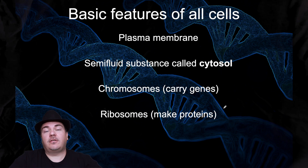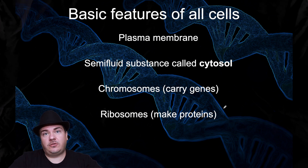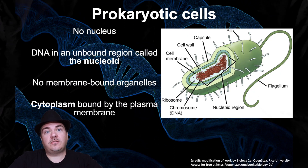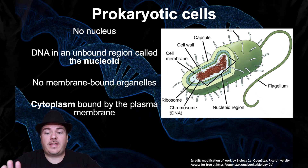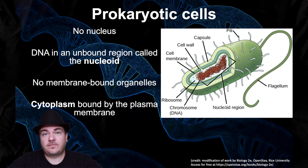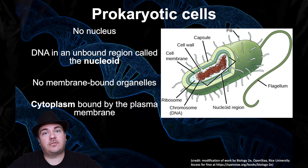So no matter what type of cell you are, all cells have these same basic features. Now, what's the difference between eukaryotes and prokaryotes? Prokaryotes are things like bacteria. Prokaryotes do not have a nucleus, and in fact they don't have any membrane-bound organelles inside the cell. They do have DNA — they have a chromosome — but that chromosome is not inside a nucleus; instead it's in a region called the nucleoid. That's where you find the chromosome inside a prokaryotic cell.